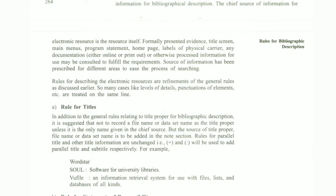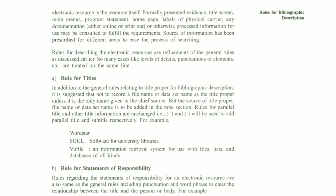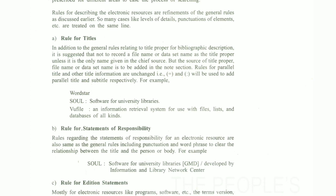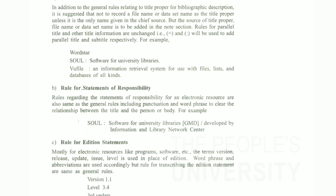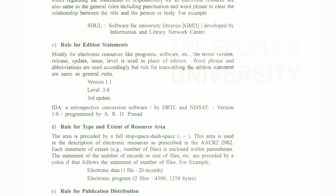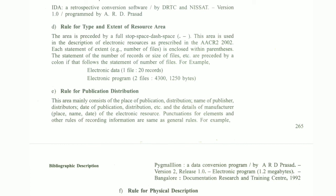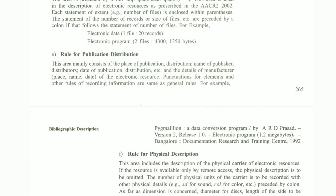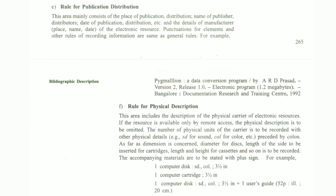This is to facilitate the process of searching, so that the searching process can be easily carried out. The rules for describing electronic resources involve a refinement of the general rules, covering cases such as level of detail and punctuation of elements. Specific rules are treated for title, statement of responsibility, addition statements, types and extent of resource area, and publication and distribution.